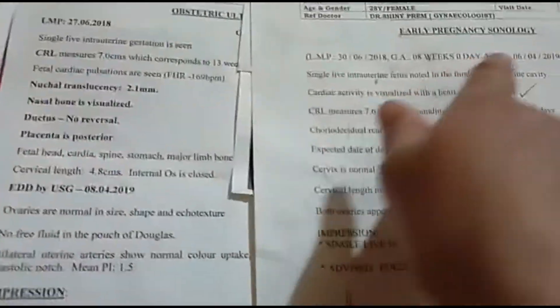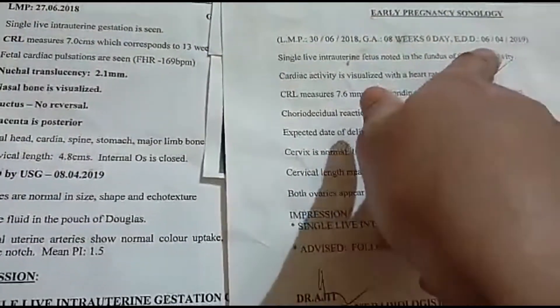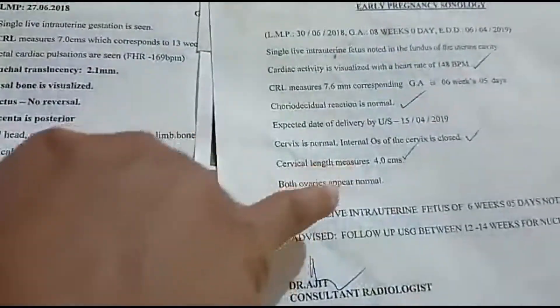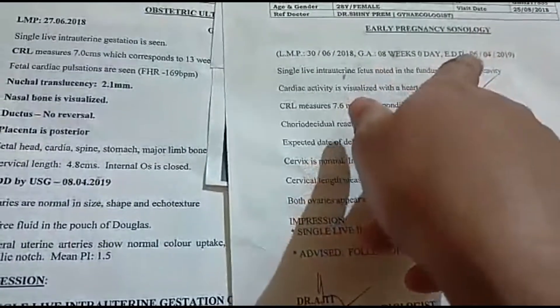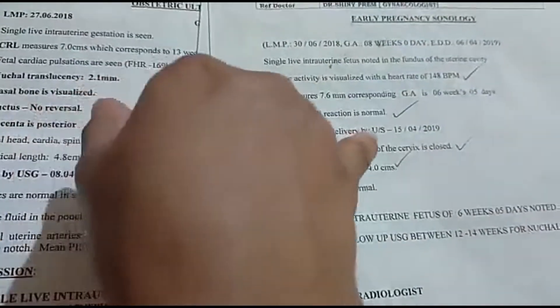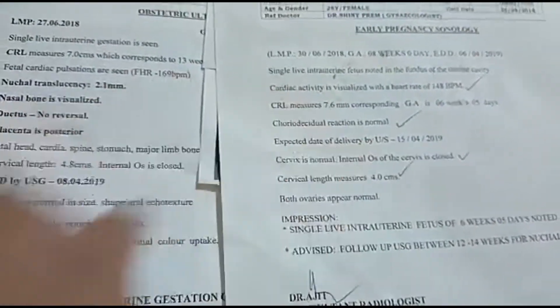This is the third scanning report. EDD is here. This is my period date for EDD. This is my computer date for EDD.